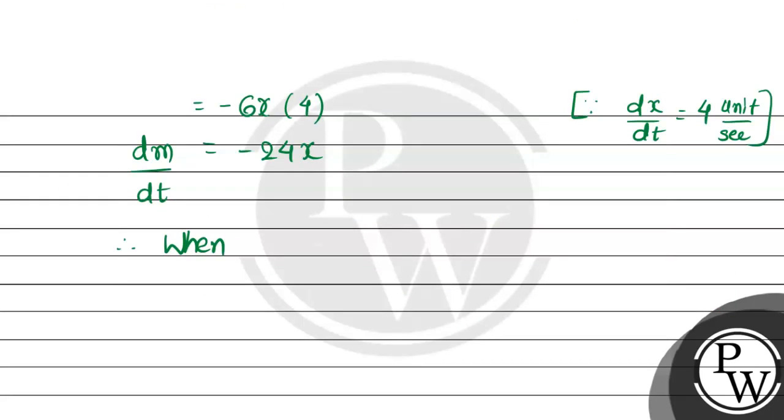So, when x is equal to 2, dm upon dt, what will we get? Minus 24 into 2, so that will be minus 48 units per second.